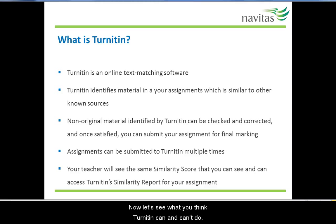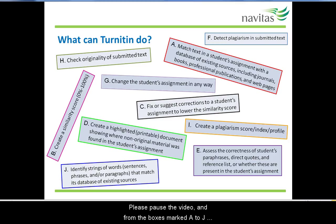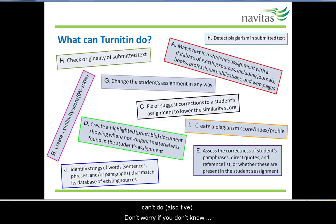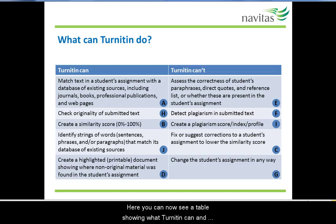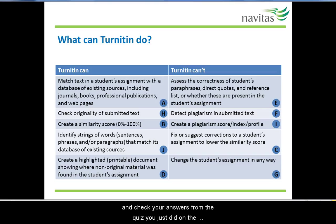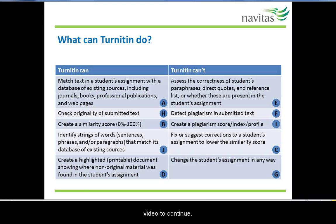Now, let's see what you think Turnitin can and can't do. Please pause the video, and from the boxes marked A to J, first select those descriptions which you think Turnitin can do — there are five — and then those which you think Turnitin can't do, also five. Don't worry if you don't know all the answers; if you're unsure, make an educated guess. We'll have a look at the correct answers shortly. Here you can now see a table showing what Turnitin can and can't do. Please pause the video again and check your answers. Don't worry if some selections weren't exactly right — this is a learning process. When you're ready, start the video to continue.